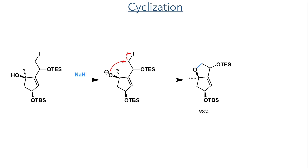In the next step, the remaining hydroxyl group was deprotonated with sodium hydride, and the resulting alkoxide underwent an intramolecular SN2 reaction to displace iodide and form a new five-membered ring in a 98% yield.